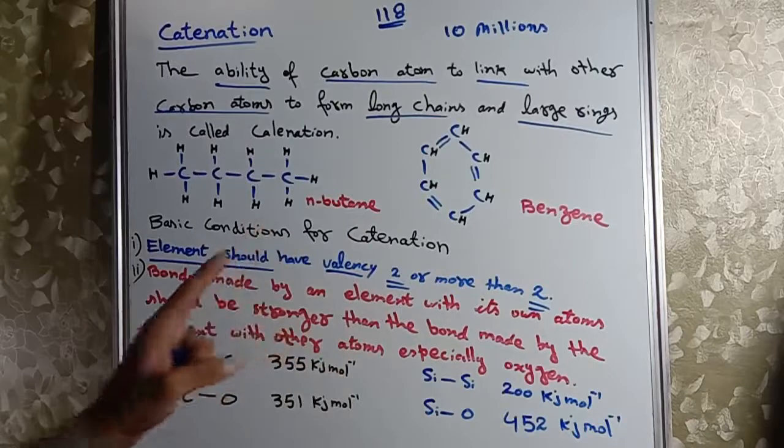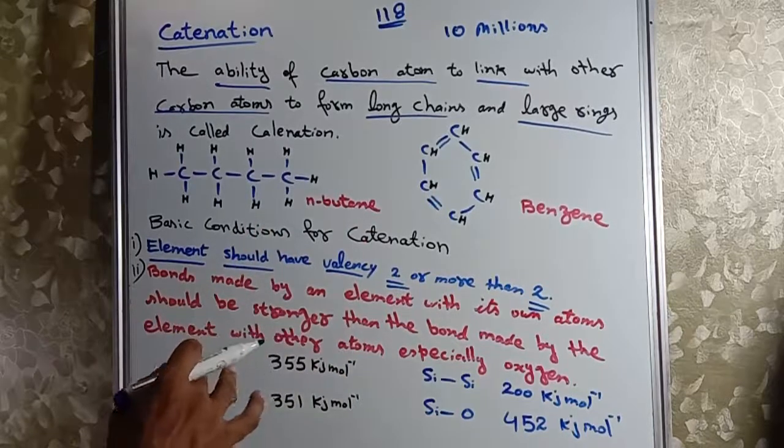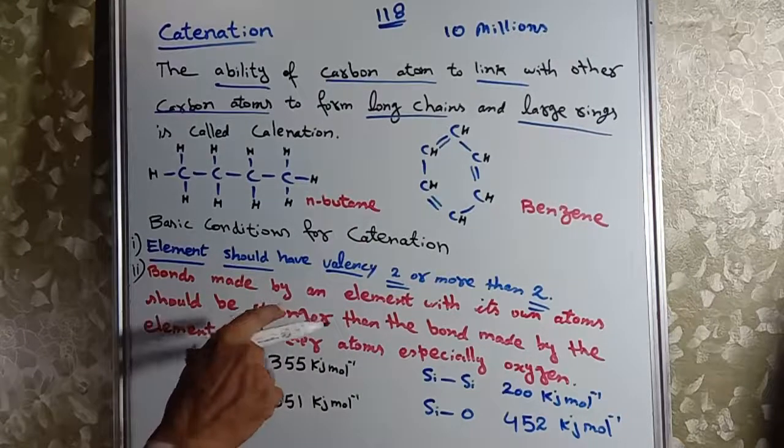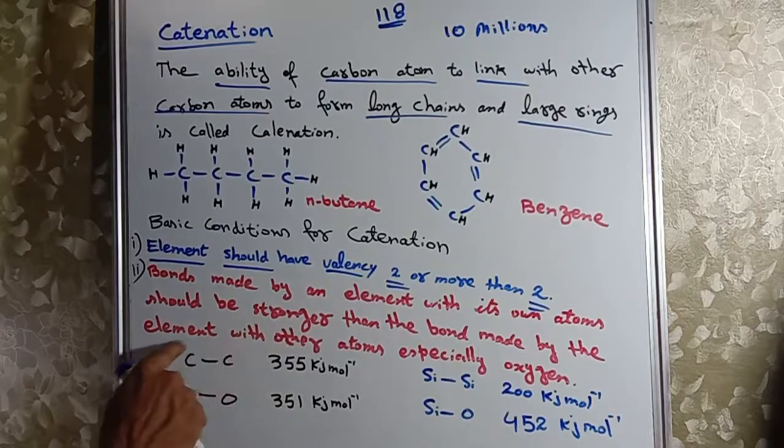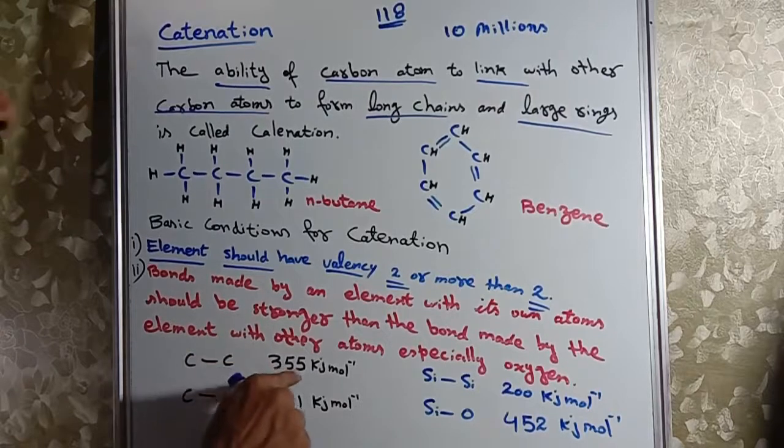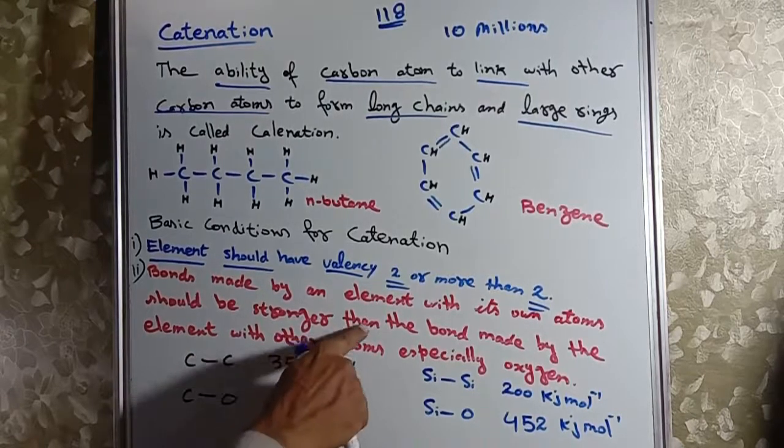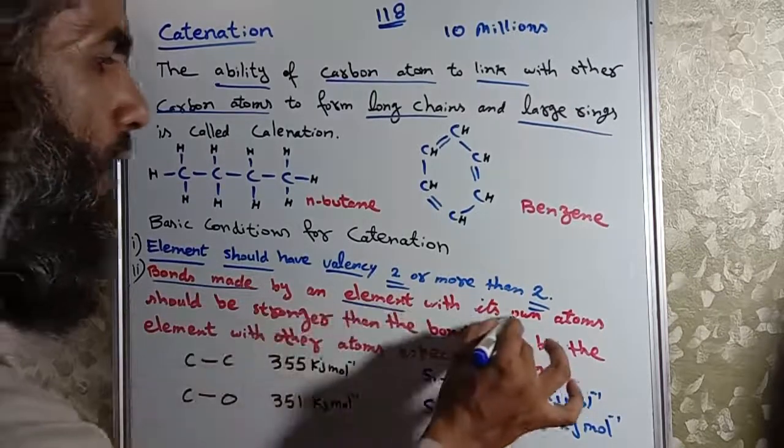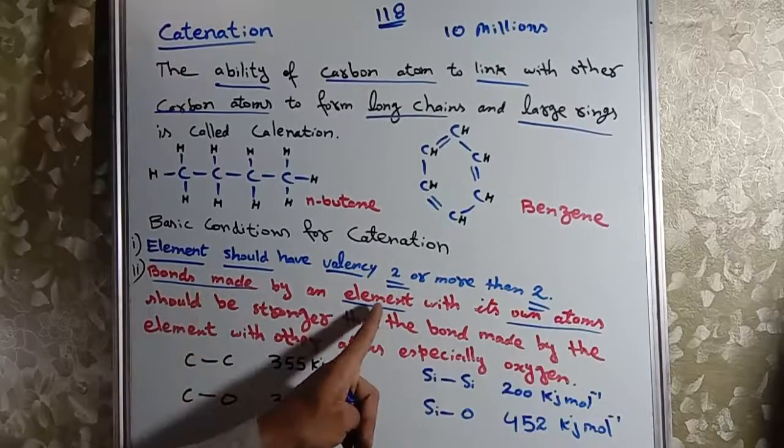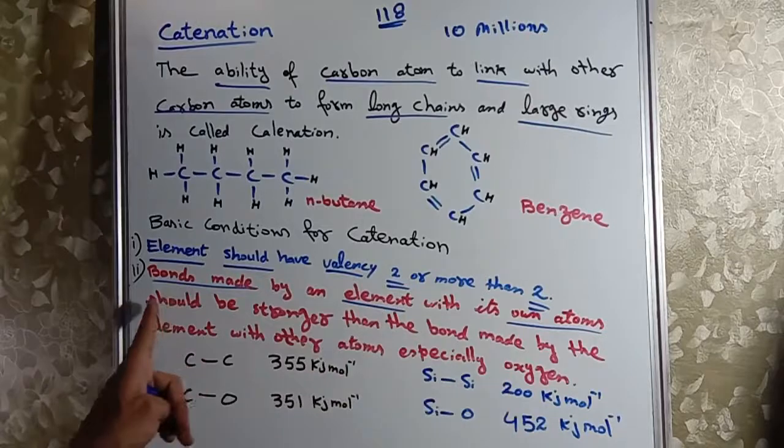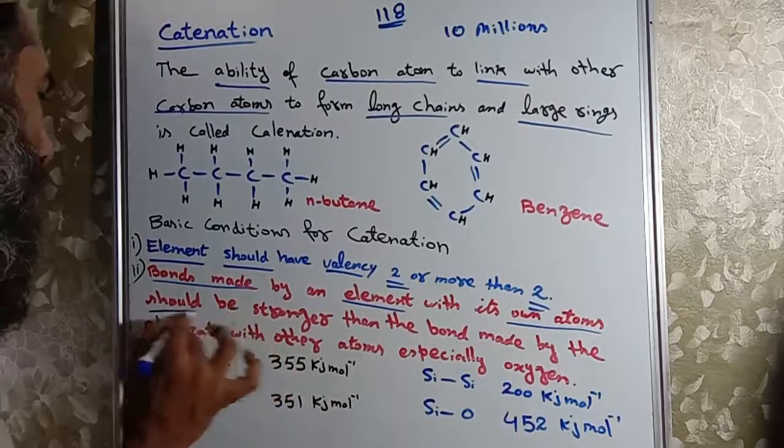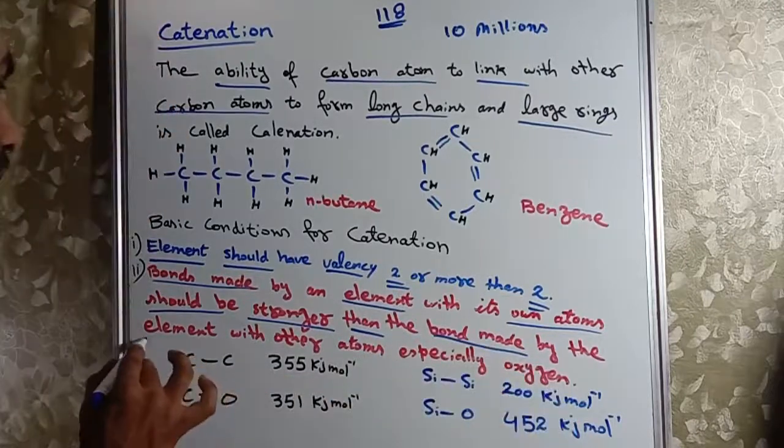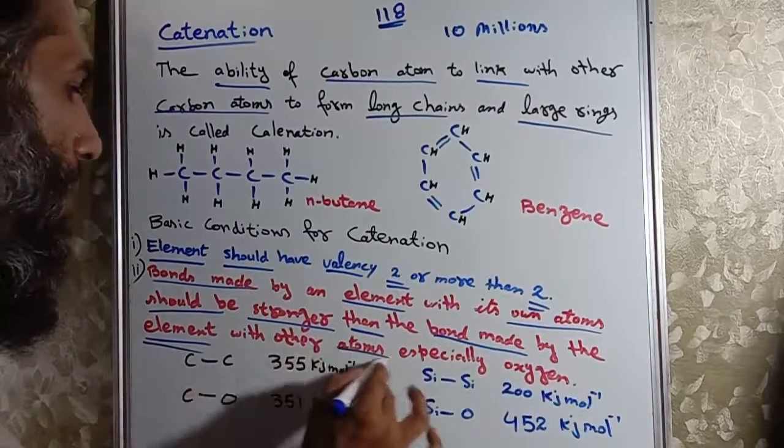Bond made by the element with its own atom should be stronger. Jis element ne catenation show karni hai, woh element jab aapse mein attach ho to uska bond bahut strong hona chahiye. The bond made by the elements with its own atoms should be stronger than the bond made by the element with other atoms.